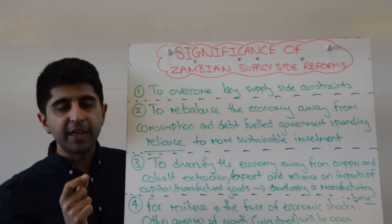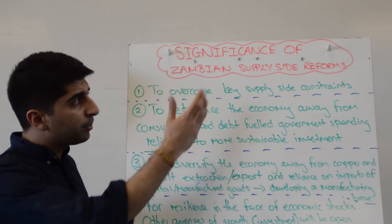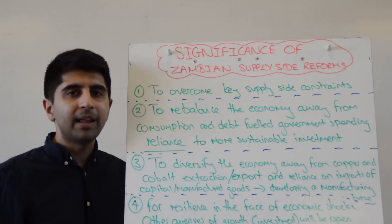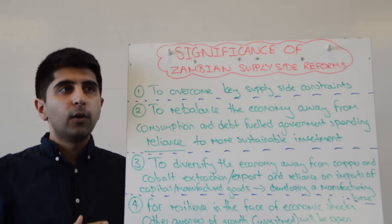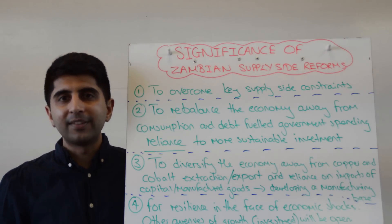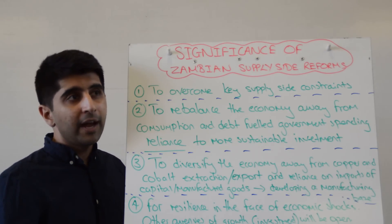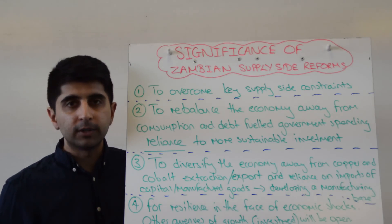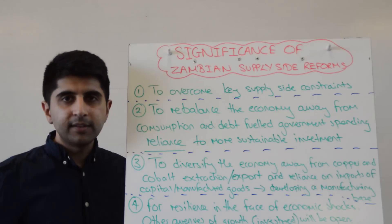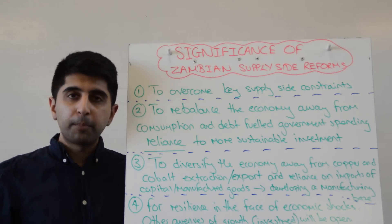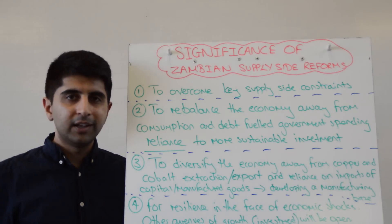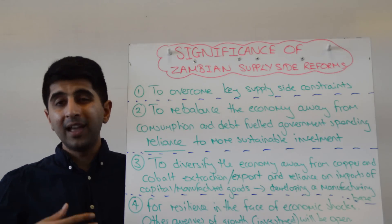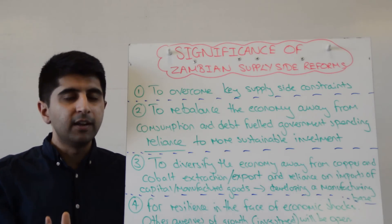To diversify the economy, supply-side reforms are important. If supply-side reforms are successful in promoting more investment and more business activity, you can imagine that a lot of those businesses will produce goods that the Zambian economy is not used to producing — maybe goods that Zambia is used to importing, like capital goods and manufactured goods. At the moment, Zambia specializes in extracting copper and cobalt for export around the world. Now that's fine if export prices are rising and demand overseas is strong. But what if there is a shock?